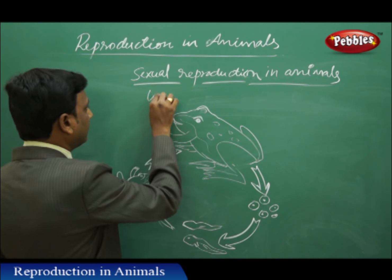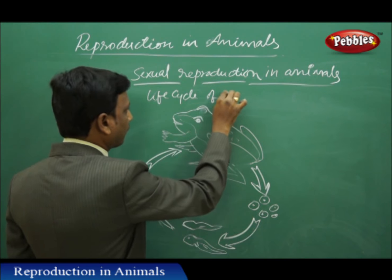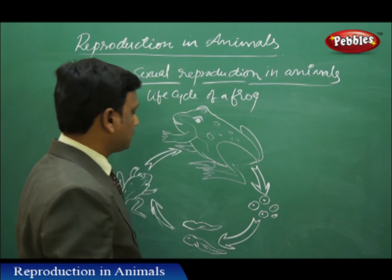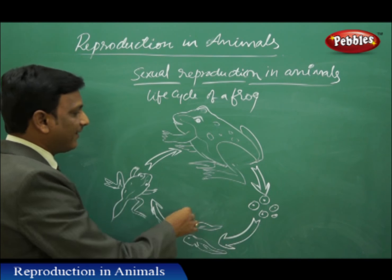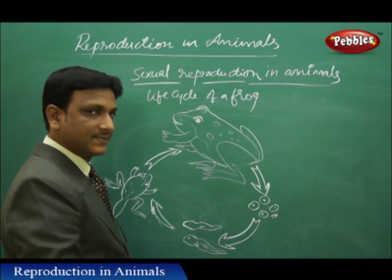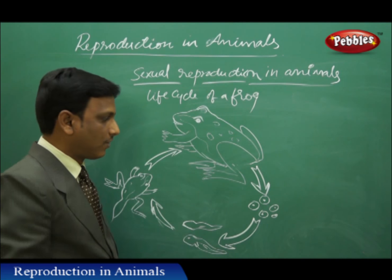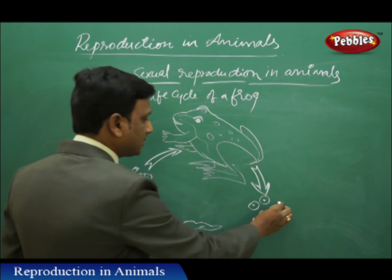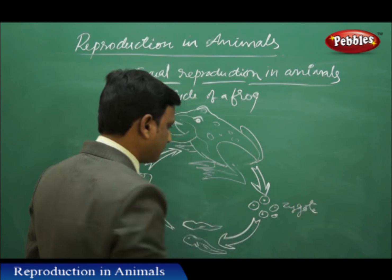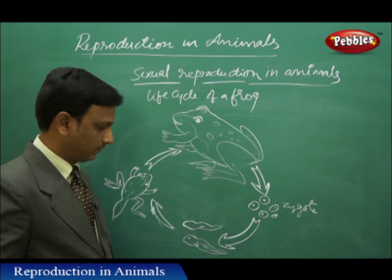If we look at the life cycle of a frog: the frog lays its eggs into the water. The eggs are fertilized by the male cells of another frog and become zygotes. These zygotes are hatched to release small babies of the frog.